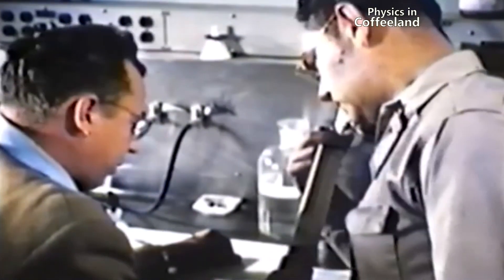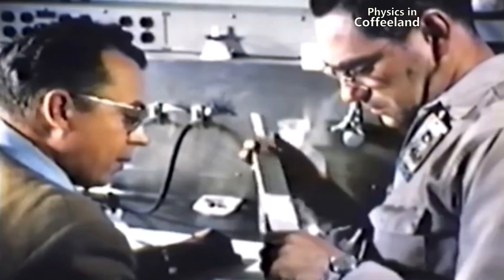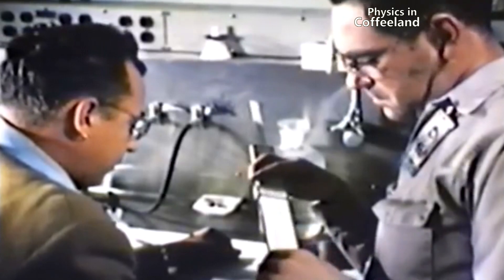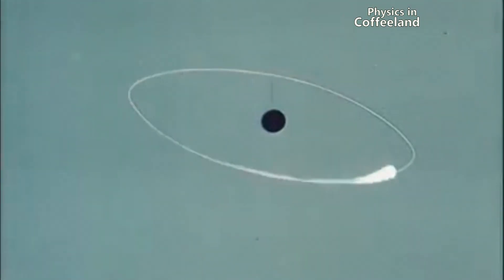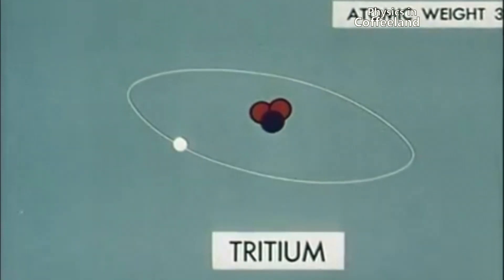It is also possible for a single element to have atoms with different number of neutrons. These variants that differ in the number of neutrons but have the same number of protons are called isotopes. Hydrogen has three isotopes: protium, with a single proton in the nucleus; deuterium, with a proton and a neutron in the nucleus; and tritium, with a proton and two neutrons in the nucleus.